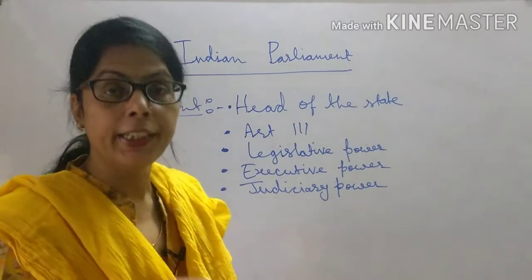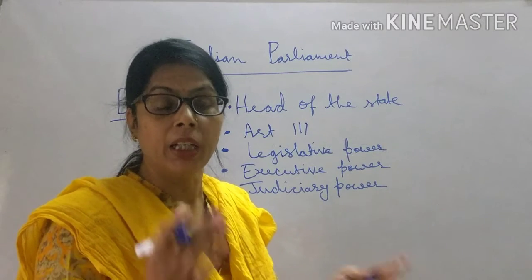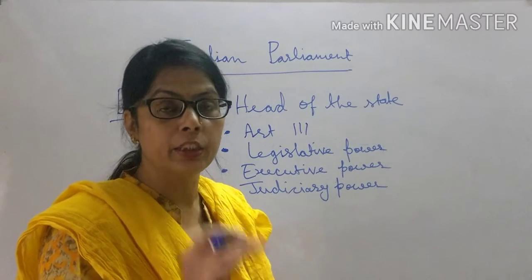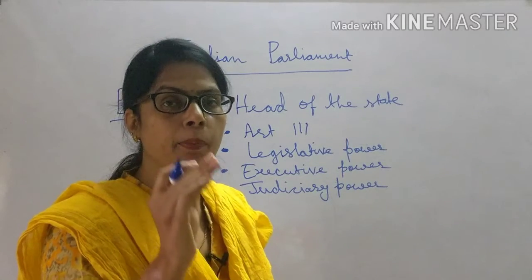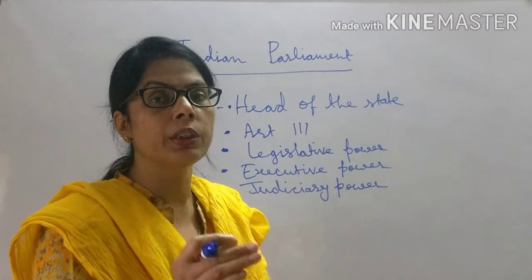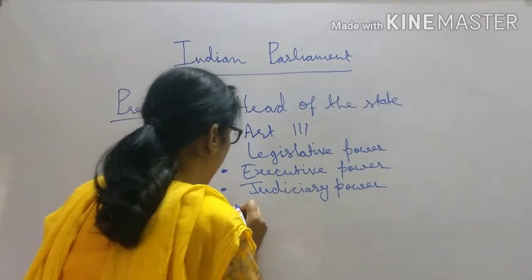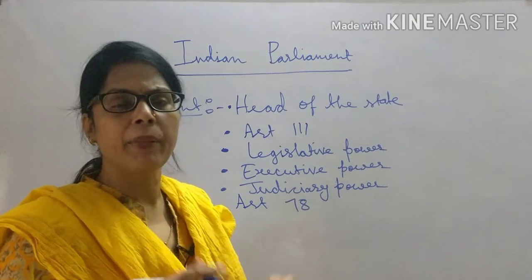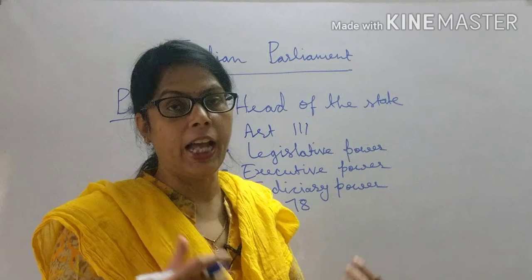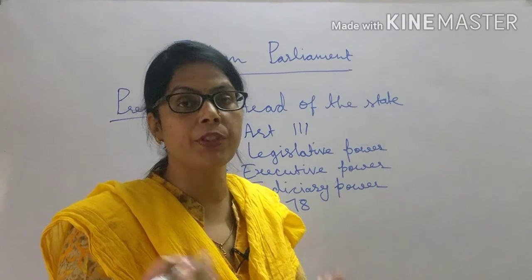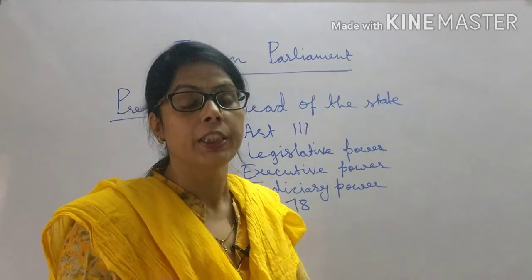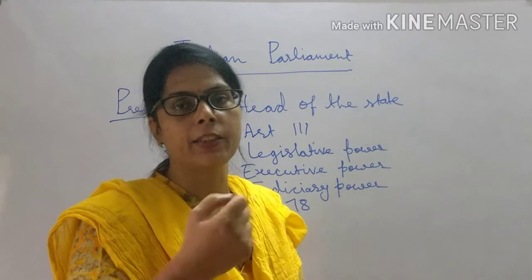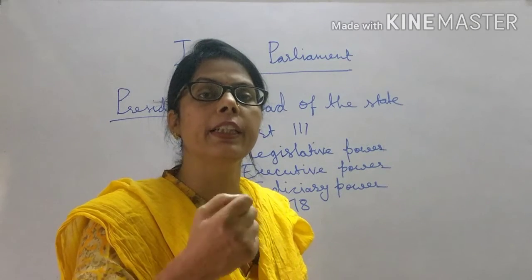However, the President cannot use any power discretionarily, because the President has to take the advice of the Prime Minister and the Council of Ministers. It is mandatory for the President to get advice from the Prime Minister or Council of Ministers to use any power, according to Article 78. The President can appoint some dignitaries like the Chief Justice of the Supreme Court, Chief Justice of the High Court, Comptroller and Auditor General, and the Chief Election Commissioner of India, but he must take the advice of the Prime Minister and Council of Ministers for appointing these dignitaries.